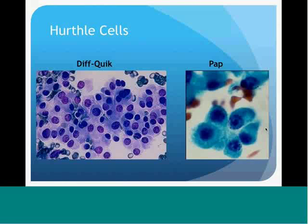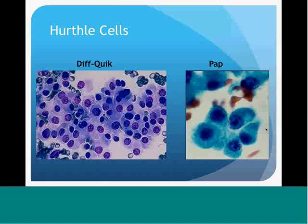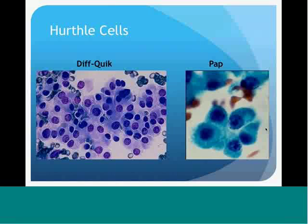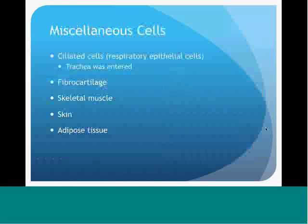This is what Hürthle cells look like on the Difquik—they have dark purple nuclei with abundant cytoplasm and kind of a cobblestone appearance. On the right, you see the Pap stain: the nuclei are dark blue cells with prominent nucleoli, which appear as a very dark spot in the center, and there is abundant granular light blue cytoplasm.